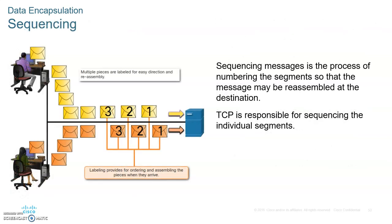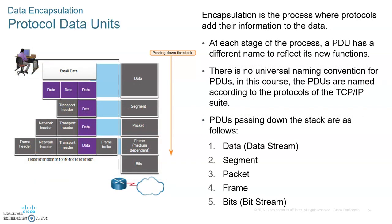TCP also does sequencing. Sequencing at the TCP layer adds a sequence number to each of those segments to indicate which segment was first, which was second, and so on, so that the receiver is able to reassemble the data on the other end if the segments were received out of order.